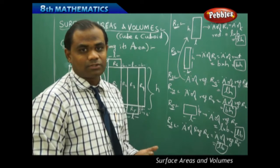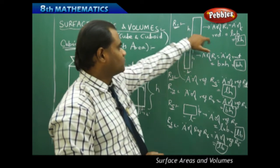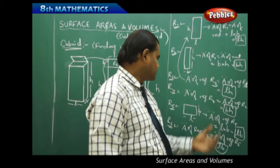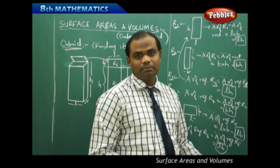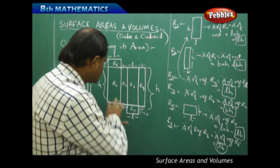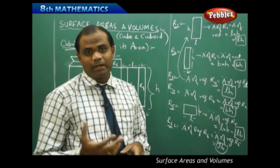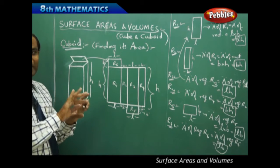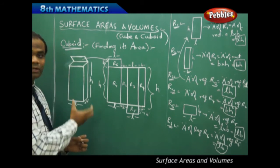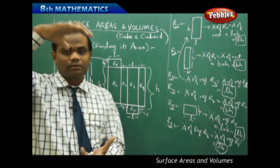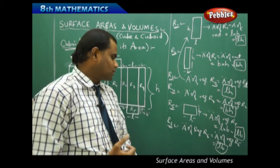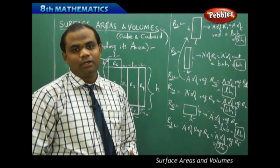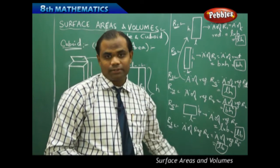I have six regions with areas: R1 = LH, R2 = BH, R3 = LH, R4 = BH, R5 = LB, and R6 = LB. Adding all six regions gives the total surface area of the cuboid. When joined back, these give a closed box with upper and lower lids. The formula for total surface area of a cuboid is derived by summing each of these areas: 2LH + 2BH + 2LB.